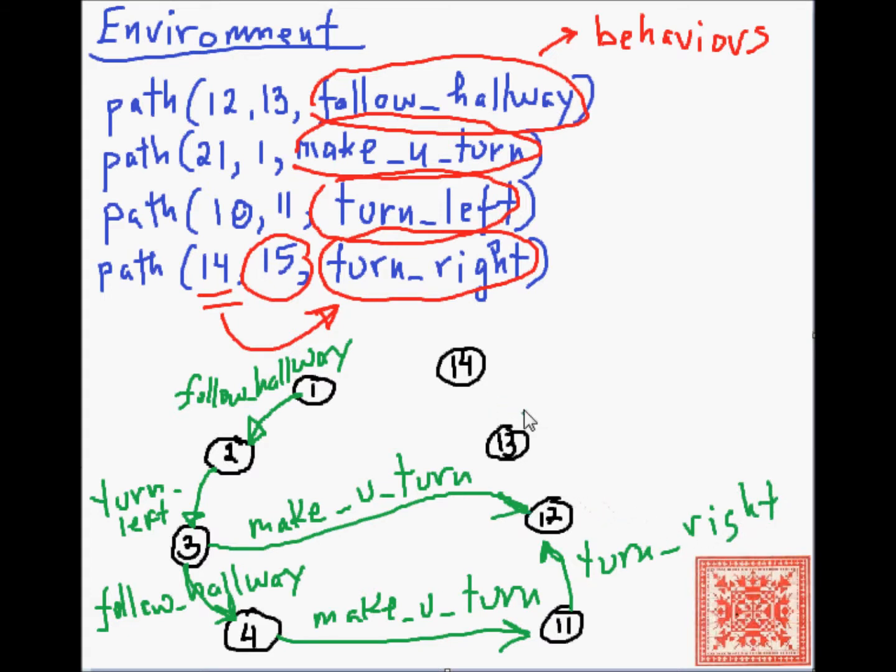If you want to get from eleven to twelve, then you turn right. From twelve to eleven, you follow hallway. From thirteen to fourteen, you turn right. Well, this is just a sample map. And let's complete the cycle. From fourteen to one, you turn left.